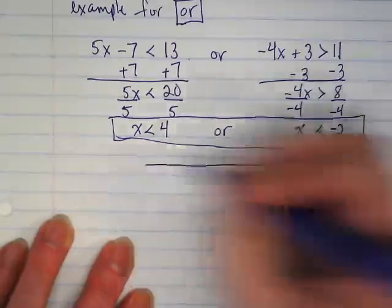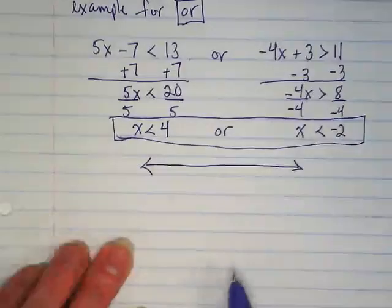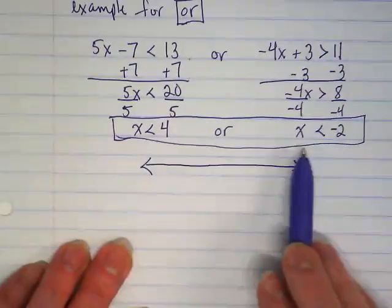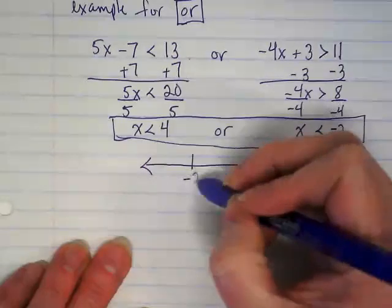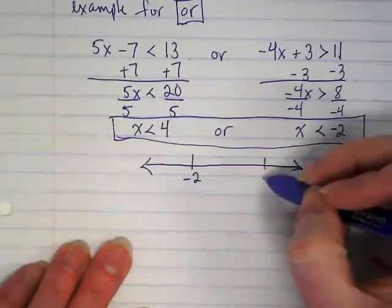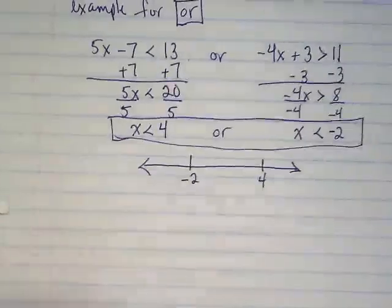What do you notice about the symbols for those two? They are both facing the same way. This is a rare compound inequality where the graph lines are both going to go in the same direction.